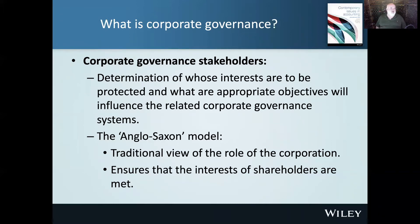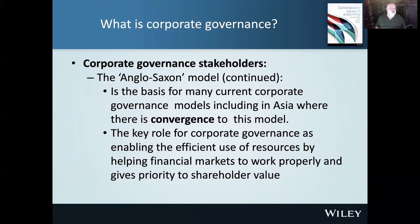In Australia, we follow the Anglo-Saxon model. Under this model, we basically say that the aim of the corporation is to manage shareholder wealth. When we look at the laws in Australia, we talk about the protection of shareholders, and our corporate governance requirements are consistent with that. The Anglo-Saxon model is the basis for many corporate governance models, including Asia, where there is a convergence to this model. It's about maximising shareholder value.